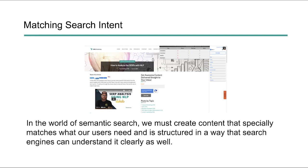We leverage a tool called WordLift on our site, but there are a lot of ways you can do it — it just makes it easier for us. In semantic search, we have to start thinking this way: how are we covering topics, are we matching user intent, do users know exactly what we're talking about, and do the search engines know exactly what we're talking about? Semantic search has really shifted the way we need to approach SEO, and knowledge graphs can help us match user intent better by making it extremely clear what it is we're talking about.